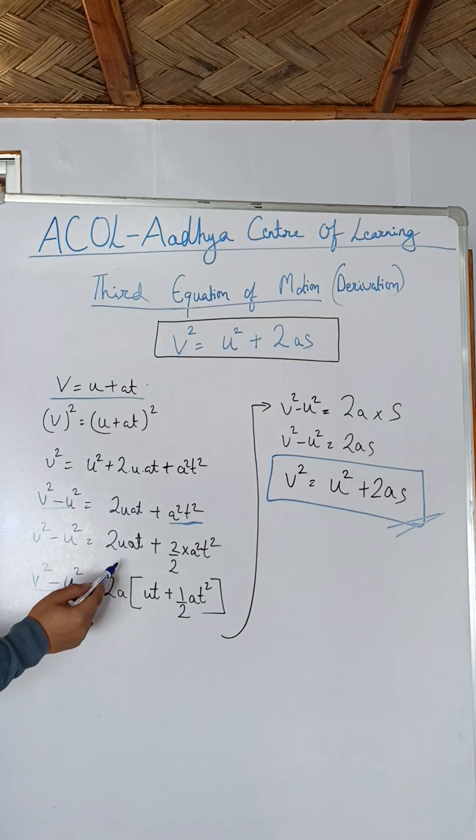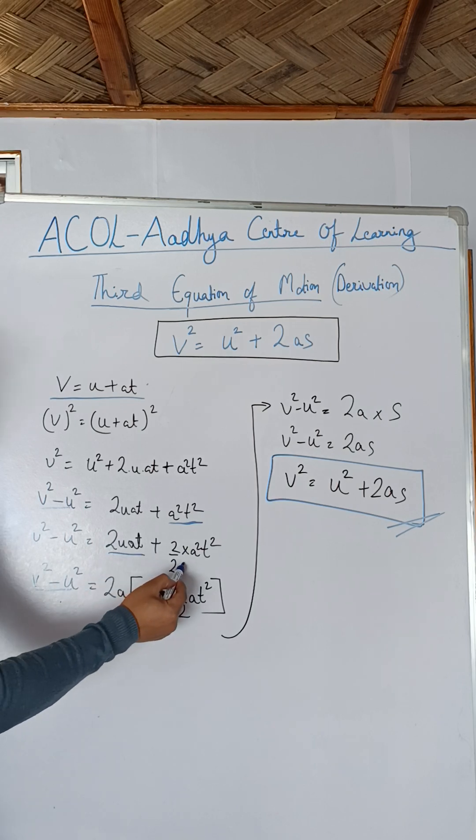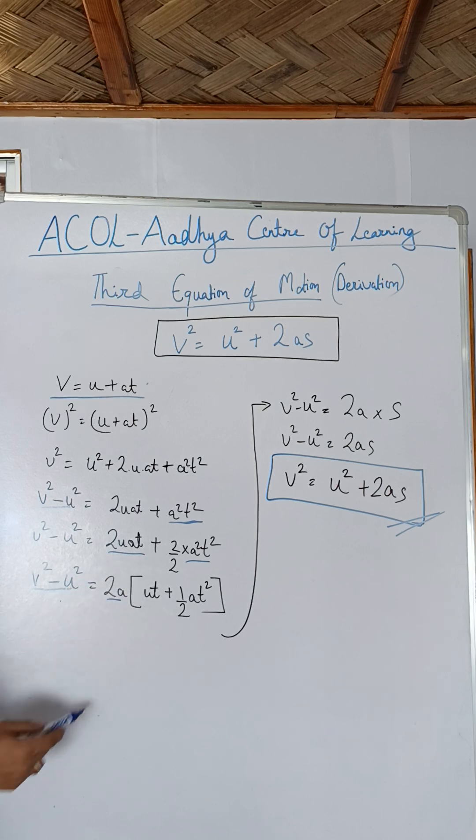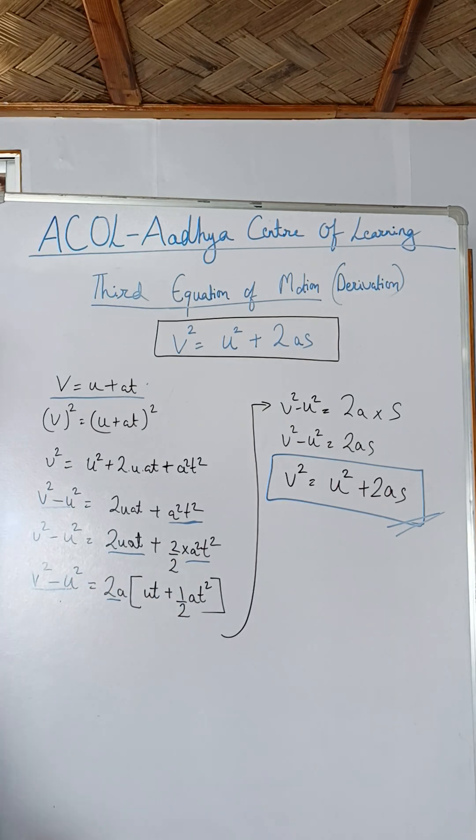So v square minus u square, we need to take 2a out. 2a, what remains is ut plus 1 upon 2 at square.